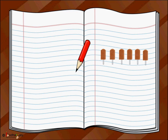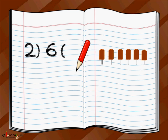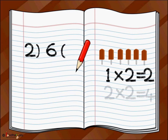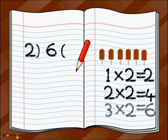Now let us take another example. We need to divide six ice creams amongst two children. So we write six, then the left bracket and the right bracket, and as we need to divide six ice creams among two children, we write two just before the left bracket. As we are dividing amongst two children we have to make groups of two ice creams, so we use the multiplication table of two: one two's are two, two two's are four, three two's are six — and we stop at six because we have only six ice creams.